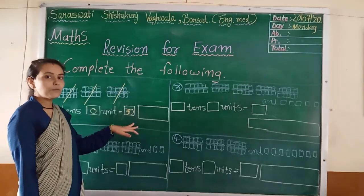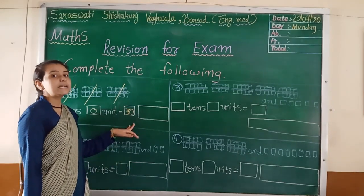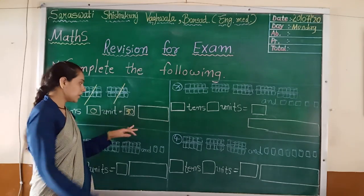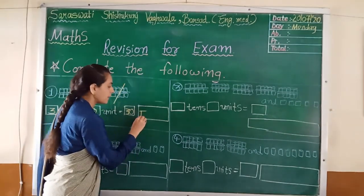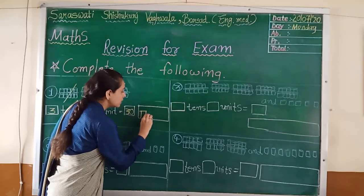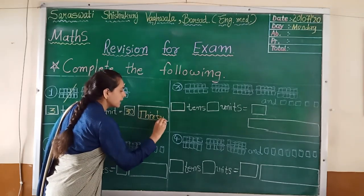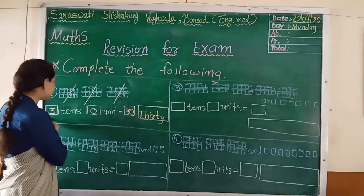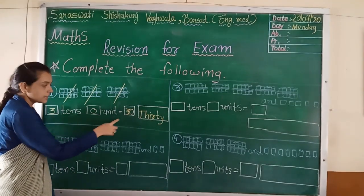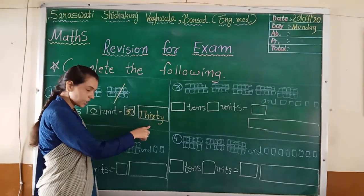So, here you have to write thirty. What is the spelling of thirty? T-H-I-R-T-Y — thirty. So I will write here: T-H-I-R-T-Y, thirty. Three tens, zero units equals thirty.